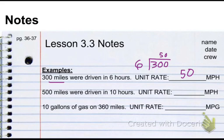Then I have 500 miles were driven in 10 hours. Well, same thing. Miles is my unit rate. So, miles comes first. Miles divided by hours. And I get 50 miles per hour. How about that?